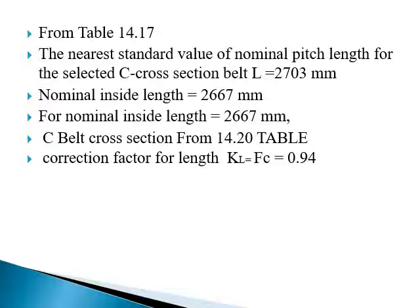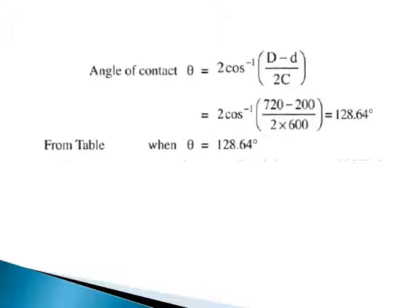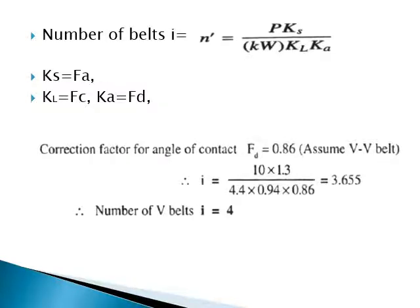The nominal inside length is 2667 millimeters. From Table 14.27, the length correction factor for the C cross-section belt is Kl = fc = 0.94. Next, calculate the angle of wrap: θ = 2·cos⁻¹((D − d) / 2C). Substituting the values of D and d gives θ = 28.64°.